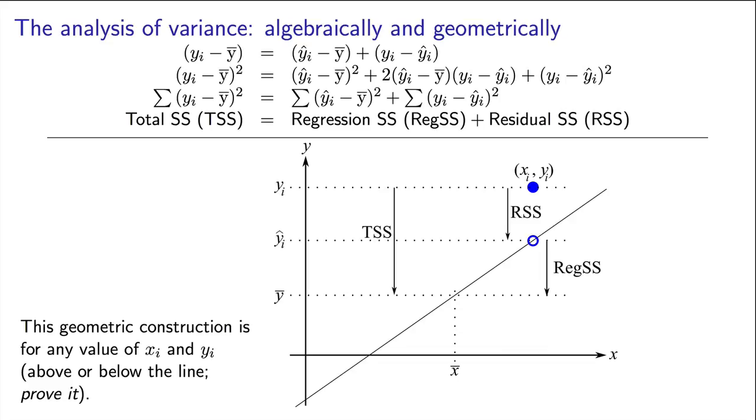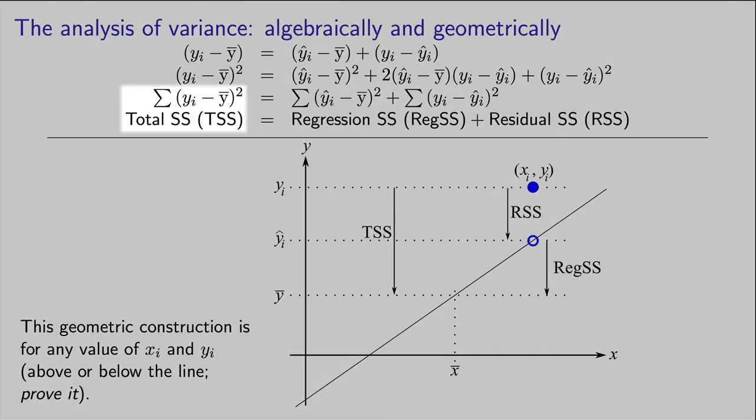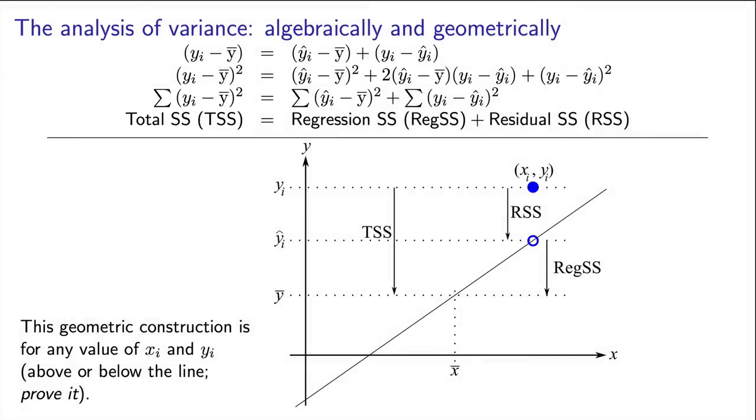The left-hand side here, the total sum of squared deviations from our base case. We call that the total sum of squares, and you can see that that formula looks remarkably similar to the variance of y. The two other deviation terms on the right-hand side are similar.